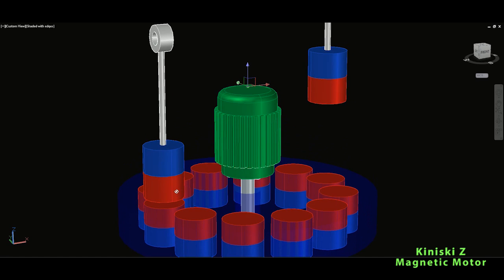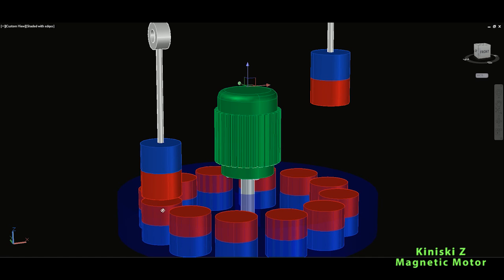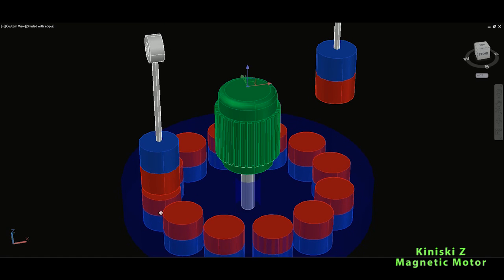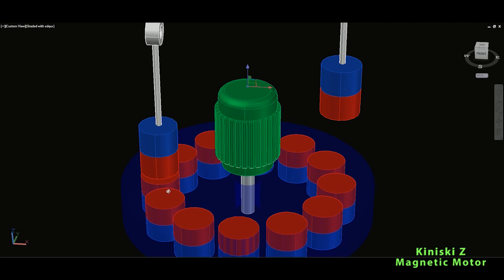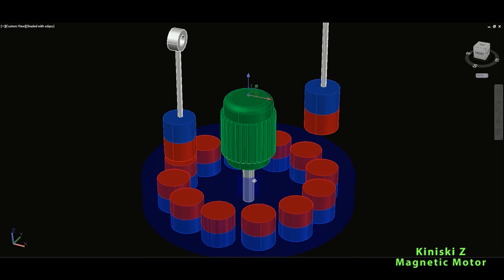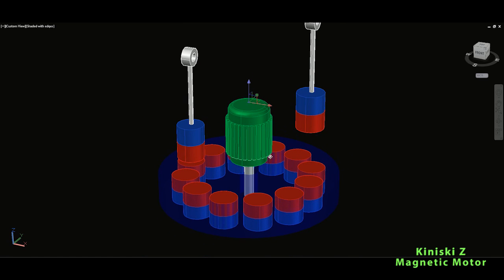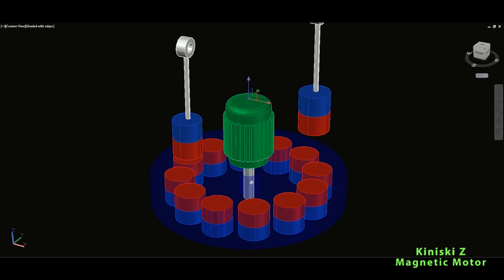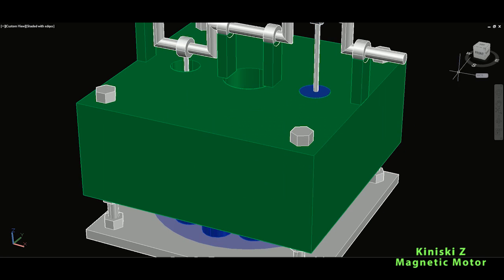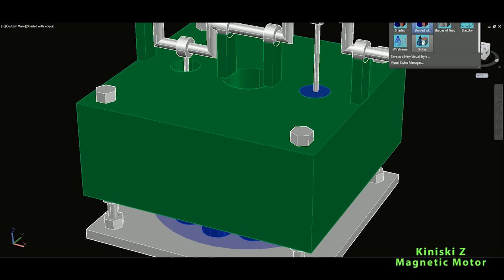The like poles will repel each other, and these strong strontium ferrite magnets have 500 times stronger force. You can read the patent, but basically that's it. Now if I move this to the x-ray for a moment, you will be able to see through.